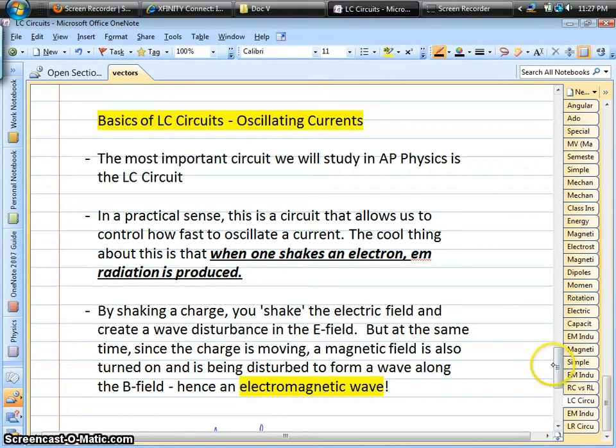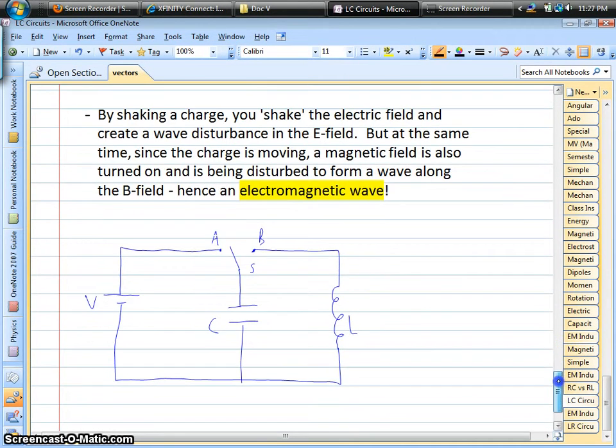This is the circuit where we combine a charged capacitor and an inductor together. A circuit that would look something like this, perhaps, where we could connect the switch to the battery, and that would charge up the capacitor. Where positives would flow to the top plate, and electrons would flow to that bottom plate.